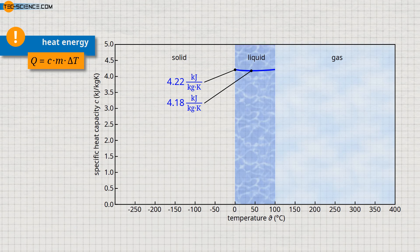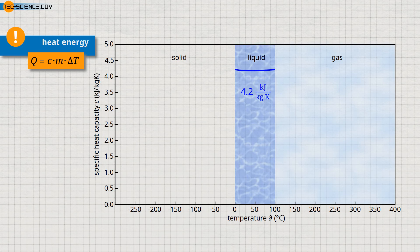Thus, it does make a slight difference whether the water is to be heated by a certain amount at 0 or 40 degrees Celsius. However, if an average value of 4.2 kJ per kilogram and kelvin is assumed for liquid water, the deviation from the maximum or minimum value is less than 1%. Thus, for many practical cases, the specific heat capacity of liquid water can actually be assumed to be constant.